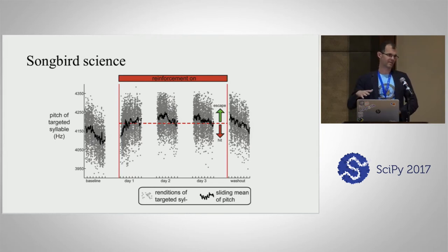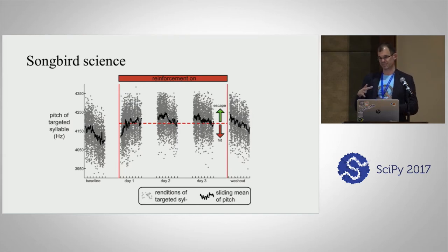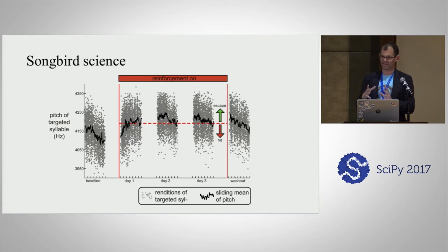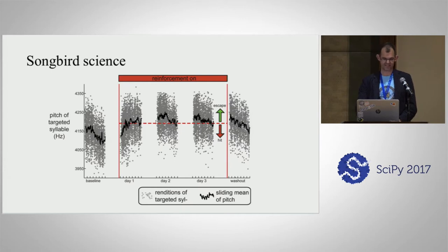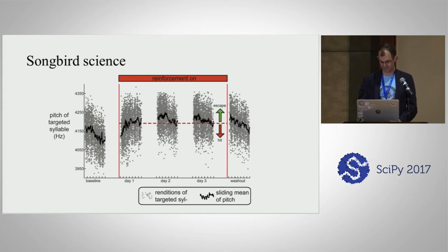This was surprising because we used to think that birds learned their song and then were done. That's kind of weird because they have a lot of real estate in their brain dedicated to learning the song and it just hangs around once they're adults. Maybe this is why — it turns out they can actually change their song as adults. Why would they still need to have plastic song?